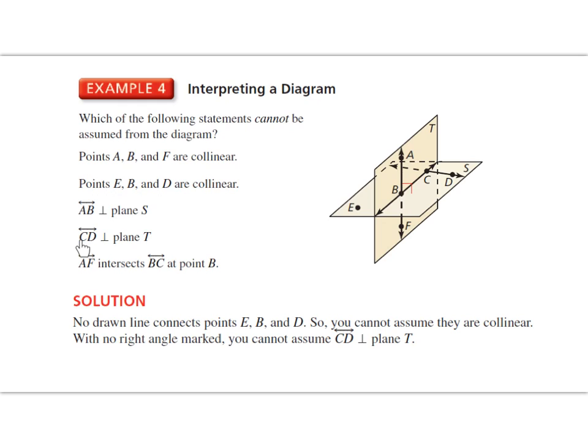And then the other statement here, line CD perpendicular to plane T, without a right angle marking, which we don't see one here, we cannot assume that line CD is perpendicular to plane T. Everything else has enough to communicate for us to conclude true.